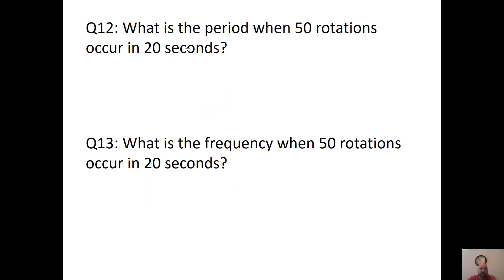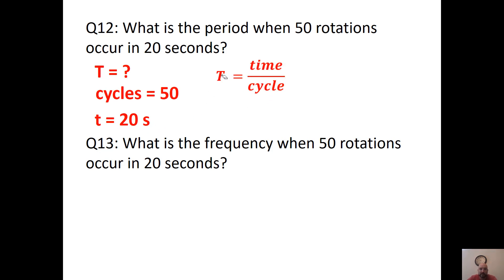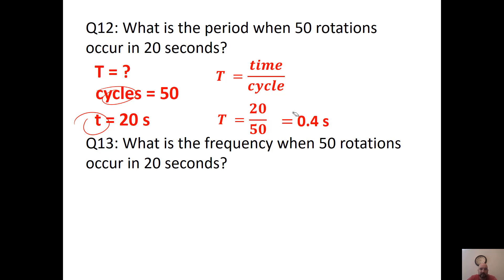Question 12: What's the period when 50 rotations occur in 20 seconds? Period equals time divided by cycles. We have 50 cycles and 20 seconds, so 20 divided by 50 gives us 0.4 seconds as our answer.